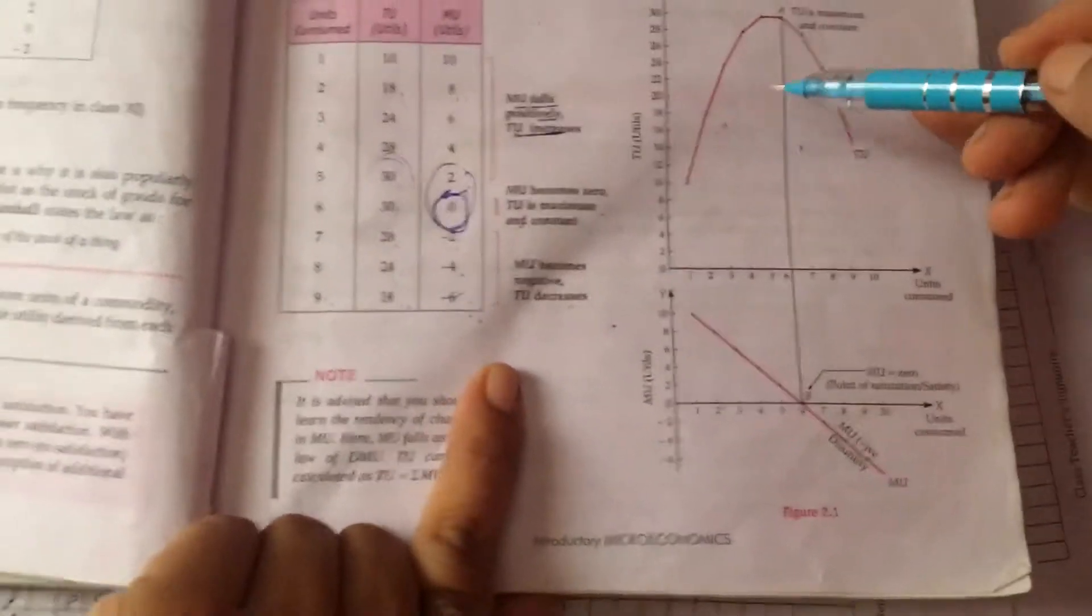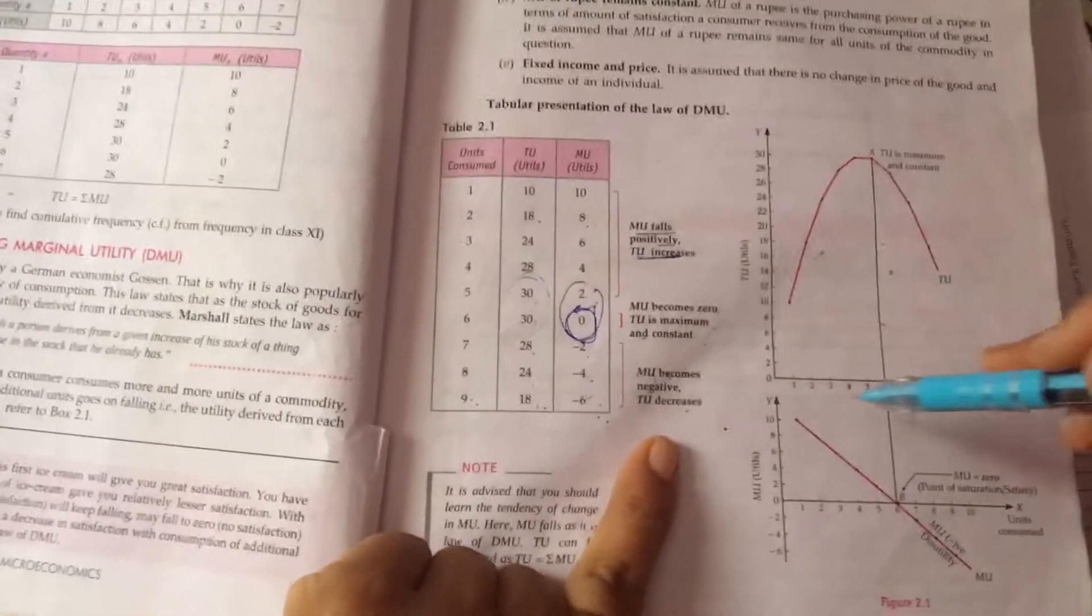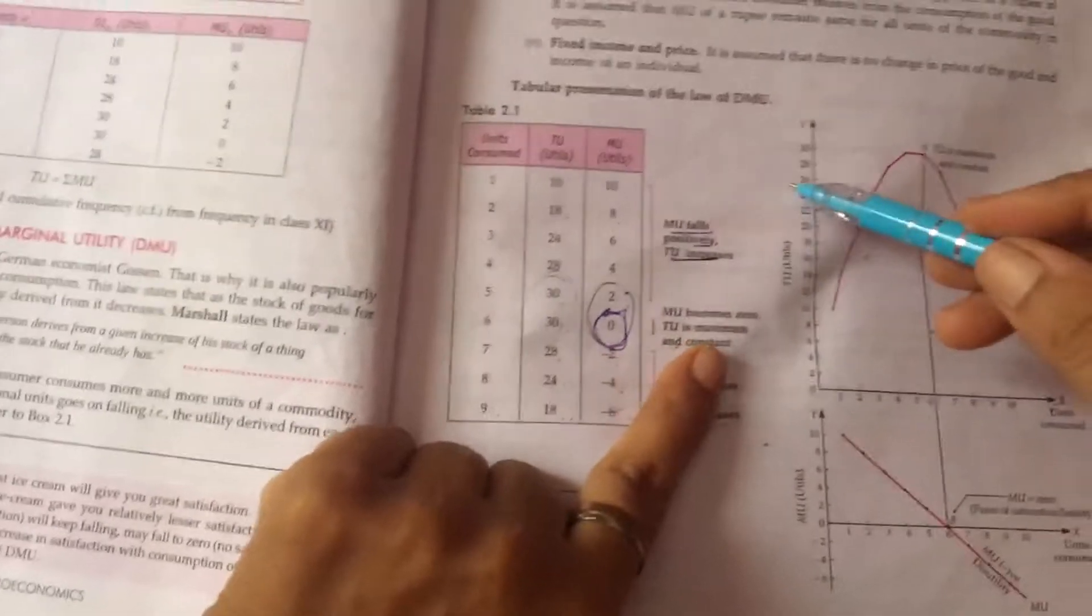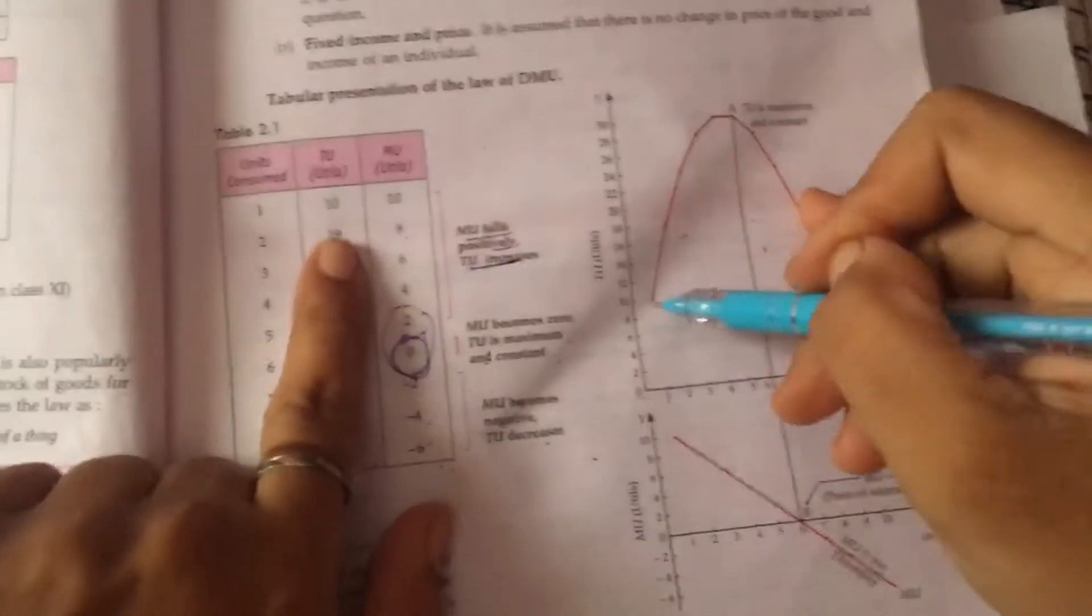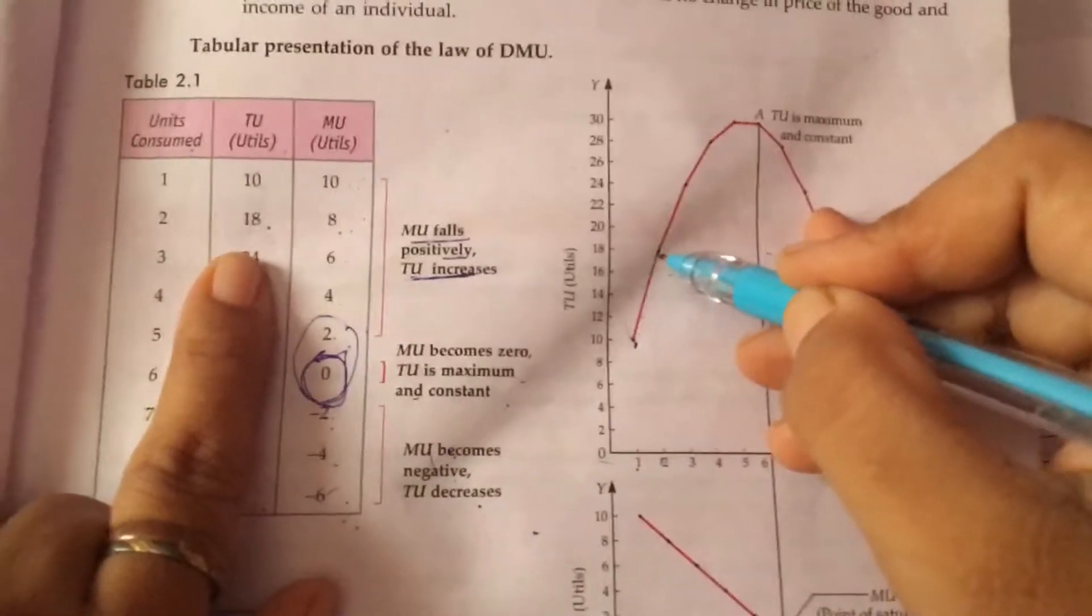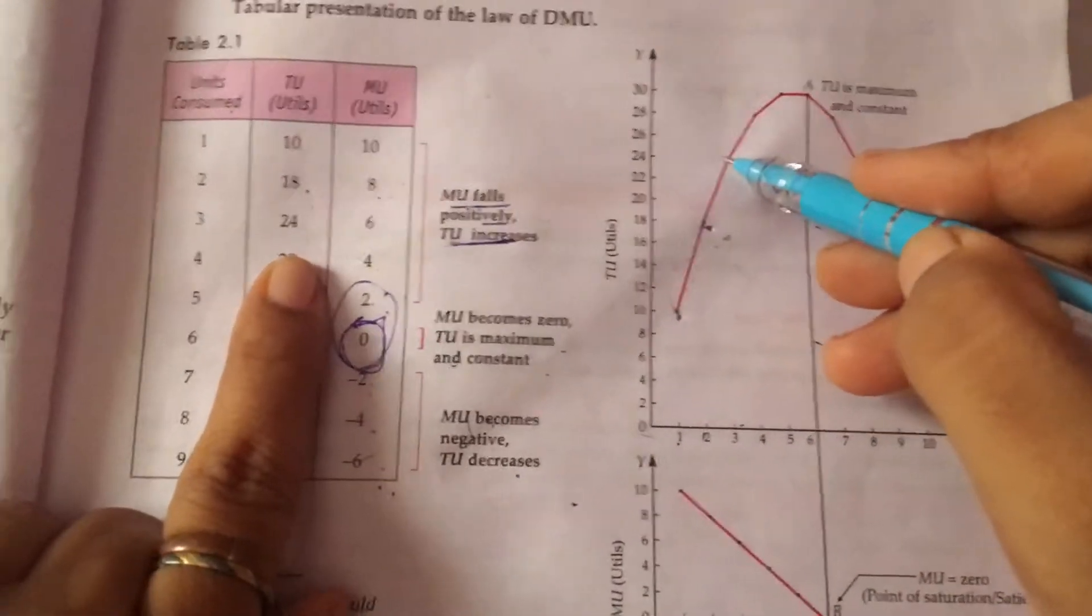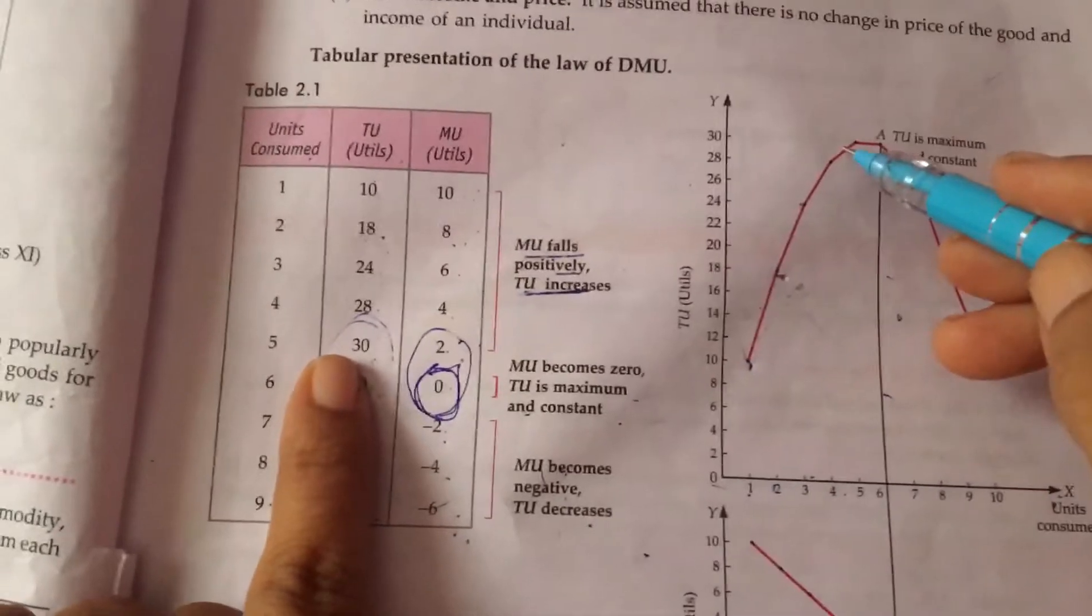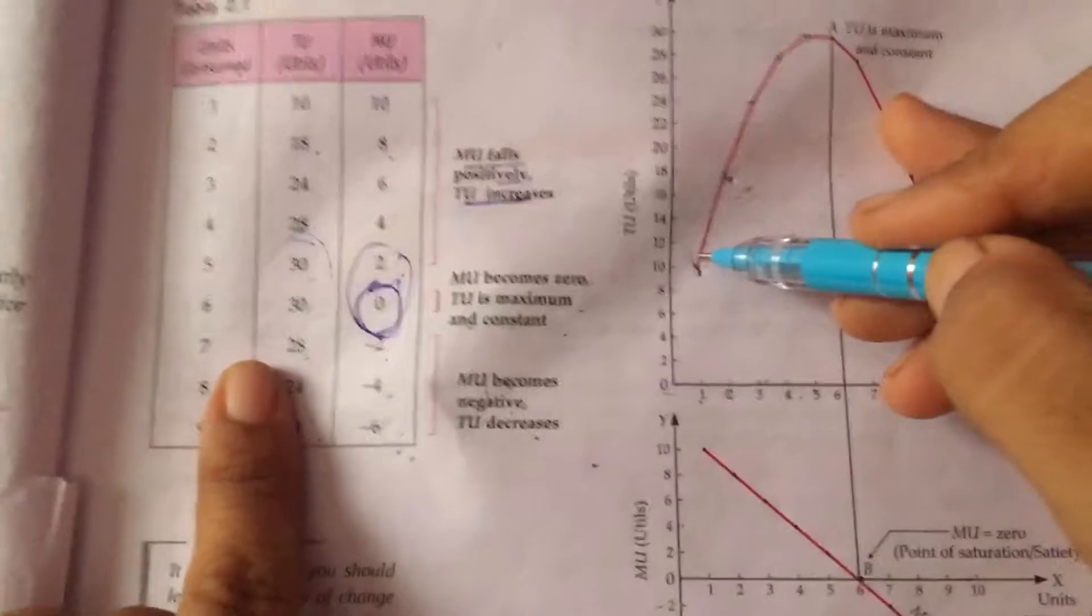X-axis: units consumed, and Y-axis: total utility. 1—like here, 10 mark. 2—18 mark. 3—24 mark. 4—28 mark. 5—30 mark.